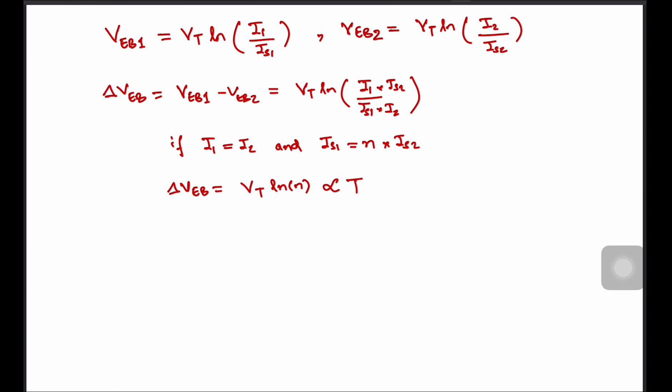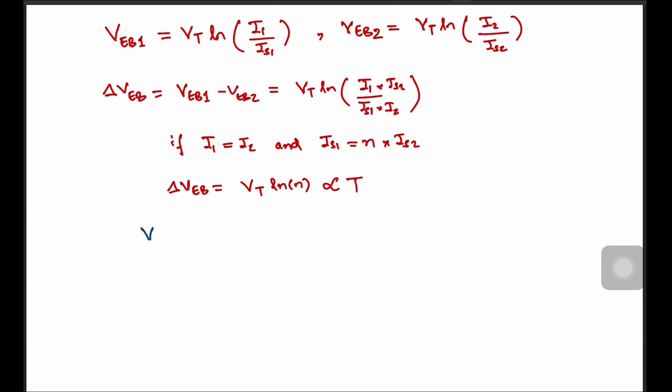However, one question still remains unanswered. Why is it called a bandgap reference? Why not just a voltage reference? Let's see why. Suppose we are able to generate an output voltage equal to VEB1 plus some constant beta times delta VEB, where beta is used to cancel the temperature dependence.